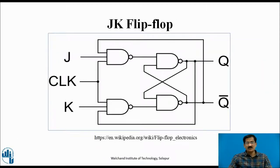This is the logical diagram construction of the JK flip-flop. At the input stage, we find two NAND gates each having three inputs. The first NAND gate has inputs: J, clock, and Q-bar. The lower NAND gate has three inputs: clock, K, and Q.